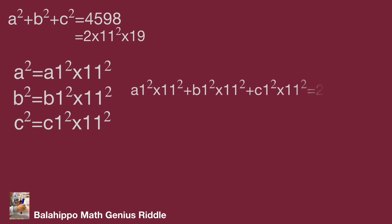Then substitute a, b, c with a1, b1, c1 equations. Simplify the equation. The equation becomes 11² multiplies quantity a1² + b1² + c1² equal to 11² × 2 × 19.